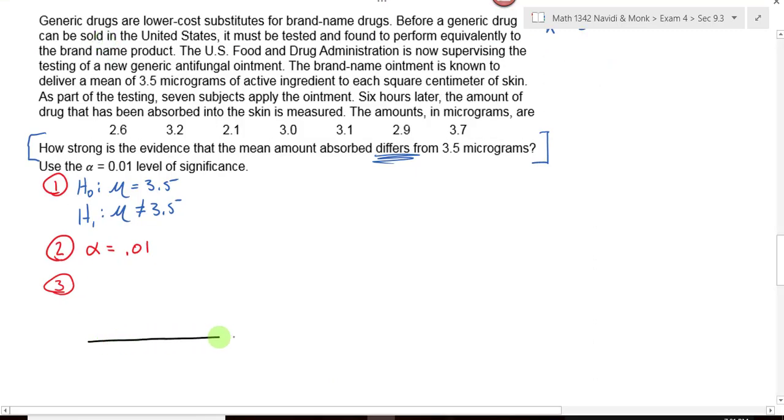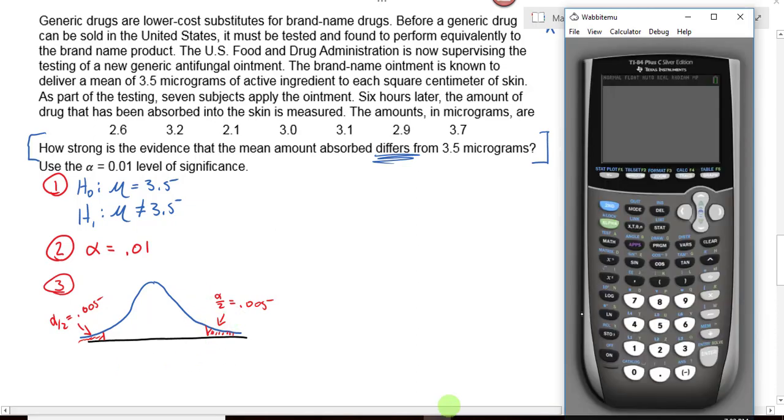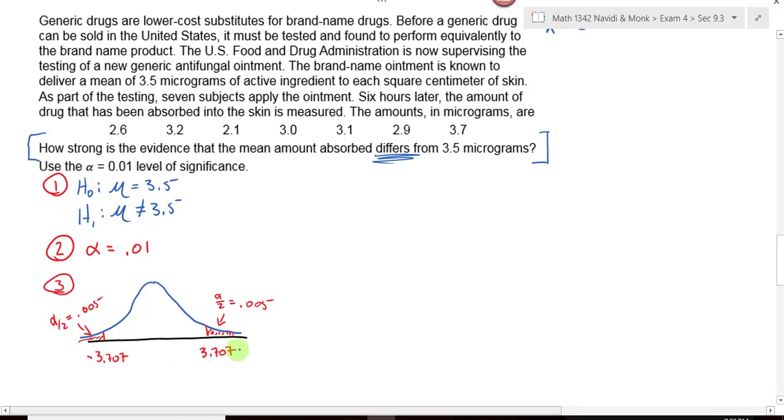My picture will be a symmetric unimodal curve. I have a two tailed test, which means that my alpha is going to be split evenly over two tails. Alpha is 0.01. So what's this area right here? And this area right here is alpha over two as well. And that's 0.005. How do I get my critical values down here? Inverse what? Second Vars inverse T because this is a T distribution. My area will be 0.01 divided by two, or you could type in 0.005. What are my degrees of freedom going to be? Because I was given seven pieces of data, I used six for my degrees of freedom. And my critical value down here is negative 3.707. So what's this critical value right here? Positive 3.707.